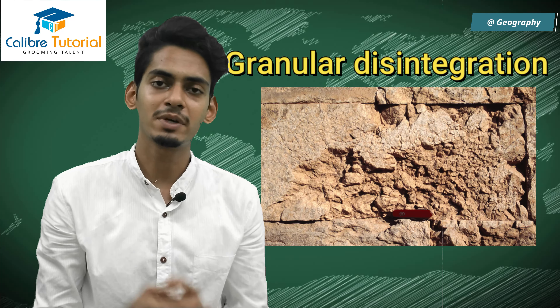Our next topic is glaciers. A glacier is a large amount of ice that melts and forms rivers. There are three types of glaciers: valley glaciers, which are present in mountain regions; continental glaciers, which are present in polar regions; and piedmont glaciers, which are present at the foothills of mountains.